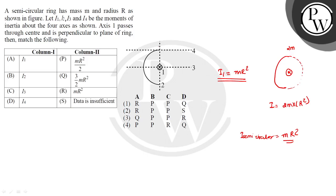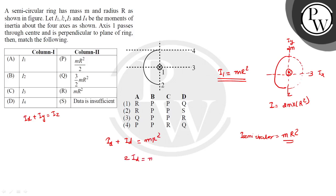The second axis and third axis are about the diameter. Using the perpendicular axis theorem: Ix + Iy = Iz. Here Ix and Iy are equal by symmetry, so 2·Id = Iz. About the first axis perpendicular to the plane of the ring, Iz = MR², so 2·Id = MR², giving Id = MR²/2. So I2 and I3 about the diameter equal MR²/2.